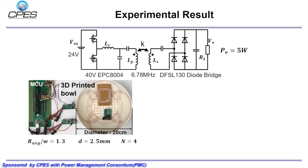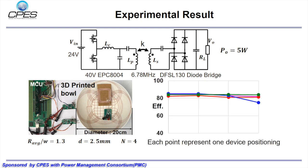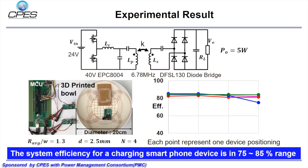The system efficiency for charging a smartphone device at 5V is shown in this figure. Here, each point represents a possible receiver positioning, so the system efficiency for charging a smartphone device is around 80% in our setup.